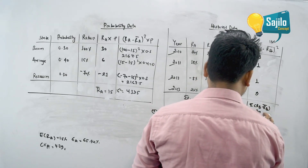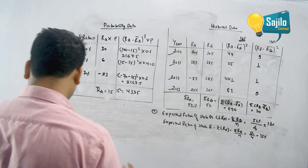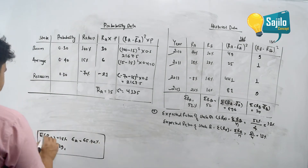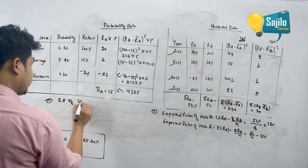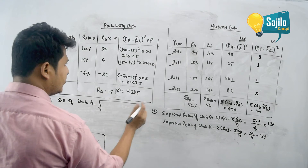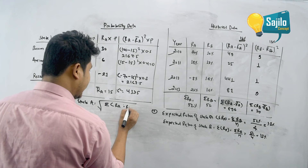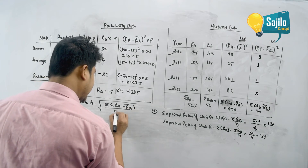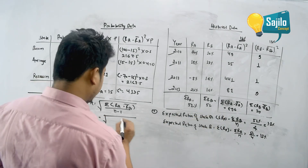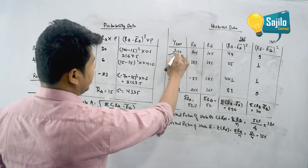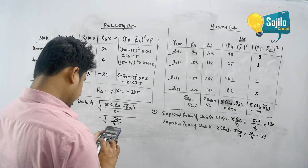Standard deviation of stock A: sigma_A equals root over summation of (R_A minus R_A-bar) squared divided by n minus 1. That is root over 596 divided by 4 minus 1, which is root over 596 divided by 3, equals root over 198.67.